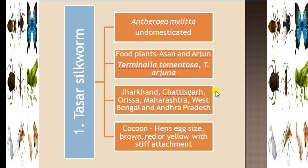These two food plants are available in Jharkhand, Chhattisgarh, Orissa, Maharashtra, West Bengal, and other areas. The Tassar silkworm is a wild species. Its cocoon is bigger in size — like a hen's egg. The color varies from brown, red, to yellow. A typical character of the Tassar cocoon is that it has a stiff attachment. In the coming slide, you can see a photograph.